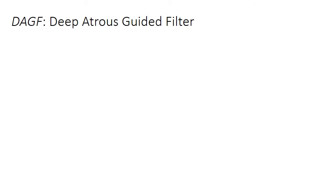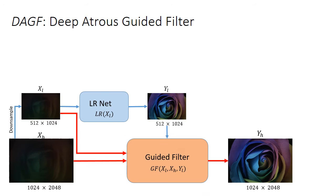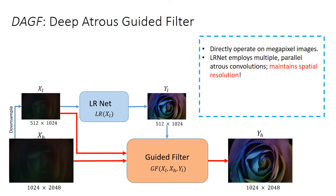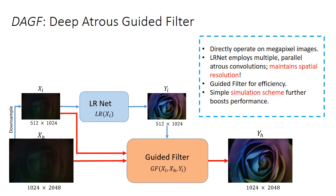Our method, titled Deep Atrous Guided Filter, directly operates on the megapixel images and performs restoration in two stages. The Low Resolution Network or LRNet first restores a downsampled version of the input. It employs multiple parallel atrous convolutions and maintains spatial resolution throughout. The Guided Filter Network enables our method to be efficient without a drop in performance. It uses the restored low resolution output as a filtering input and provides the high resolution output via joint upsampling. The two components are trained end-to-end. We further employ a simple simulation scheme to further boost performance.